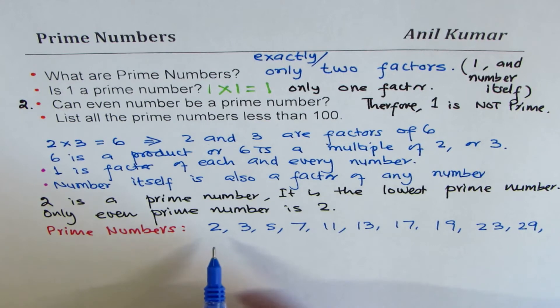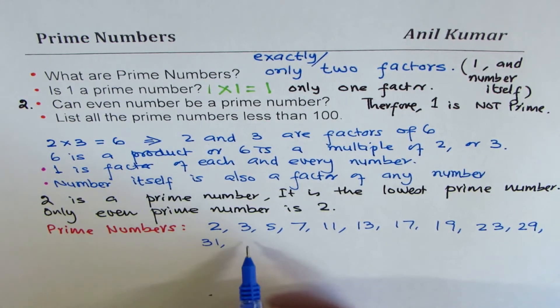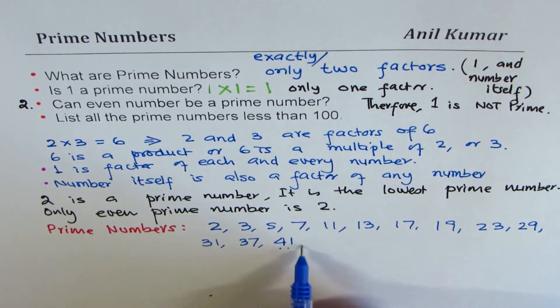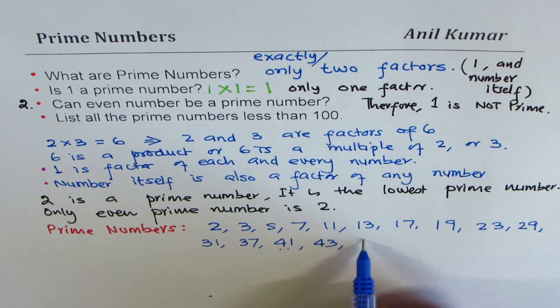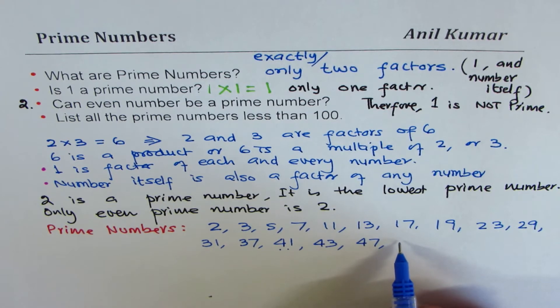Then in 30s, we have 31. 33 is divisible by 3. 37 could be one. We are not sure about it, so we'll write 41. 43 could be there. 47 could be there. So 49 is seven times seven, so we'll remove 49. 51, five plus one is six, so it can be divided by three. 53 we'll write for the time being. 57.